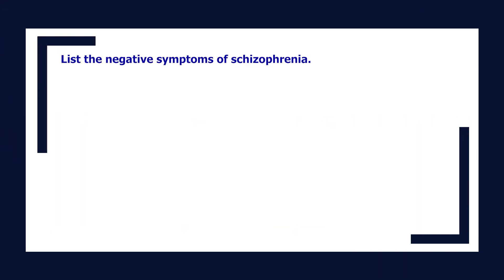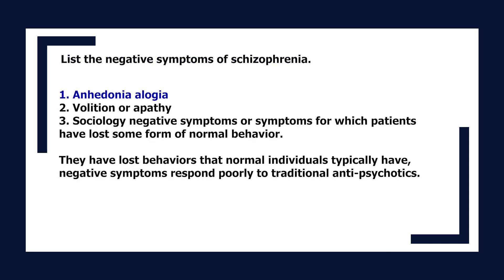List the negative symptoms of schizophrenia: anhedonia, alogia, avolition or apathy, and asociality. Negative symptoms are symptoms for which patients have lost some form of normal behavior — behaviors that normal individuals typically have. Negative symptoms respond poorly to traditional antipsychotics.